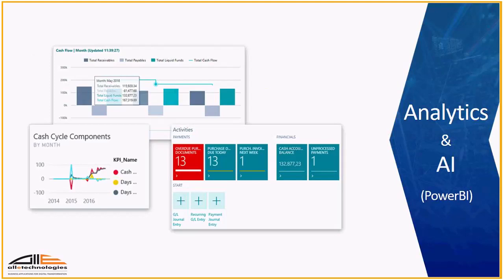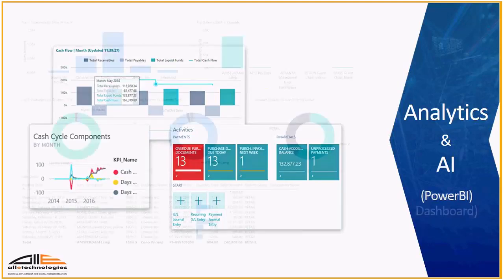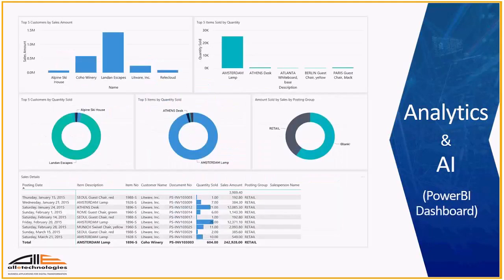The screenshot appearing now shows a dashboard with cash flow forecast along with the customer cash cycle and activity tiles. If you notice, the cash cycle is a Power BI report. The screenshot here shows an intuitive set of Power BI reports on the Power BI dashboard for the Business Manager, helping the manager easily identify key customers, items and sales trends to make key business decisions.